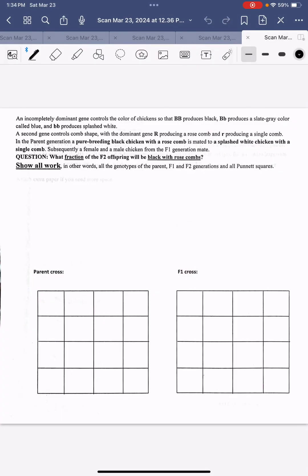Let's solve this dihybrid Punnett square problem together. An incompletely dominant gene controls the color of chickens so that big B, big B produces black.